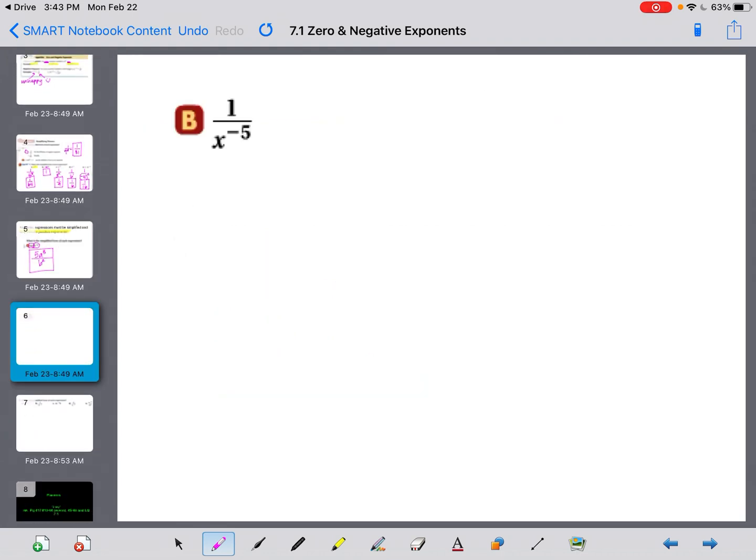1 over x to the negative 5th. Now, we haven't seen this before with the negative exponent on the bottom. But again, because it's a negative exponent, it doesn't like where it is, and we need to move it to the other floor. So this is actually going to equal a 1 on the top times x to the 5th on the top. And now there's nothing left on the bottom, so we don't have to worry about this fraction anymore. And 1 times x to the 5th just equals x to the 5th.